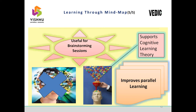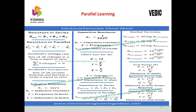Mind map improves parallel learning. Looking at the slide, it gives a complete picture about resistors in series, capacitive reactance, decibel formulas, and the formulas used in electrical engineering — this is parallel learning. Looking at one thing at a time, the brain learns quickly and remembers quickly. When information becomes too much, a person naturally loses focus towards association, clustering, fetching, and connecting things.